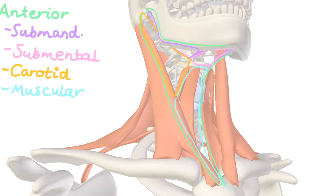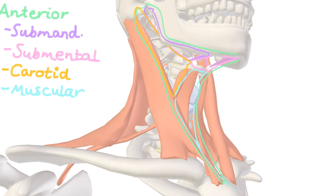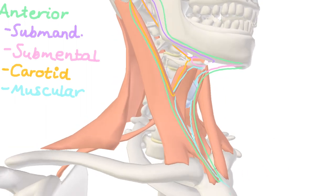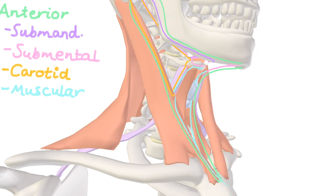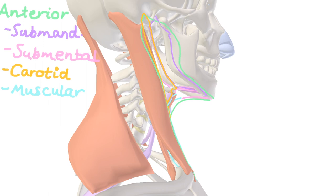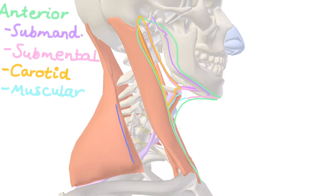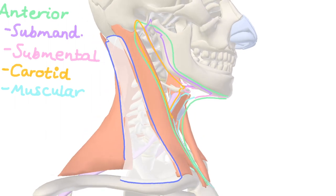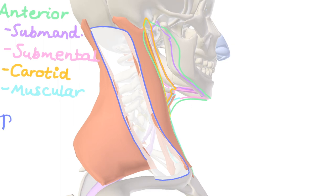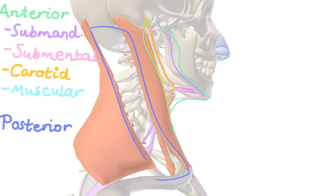Now let's move posteriorly. I'm going to highlight the omohyoid, a muscle we've mentioned a few times. Let's define the borders of the posterior triangle: trapezius posteriorly, the sternocleidomastoid anteriorly, and a bit of the clavicle as well. The posterior triangle is divided into two discrete triangles, separated by the omohyoid muscle.